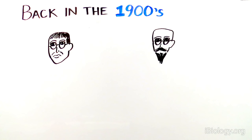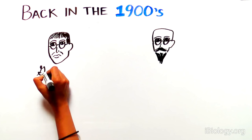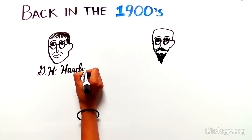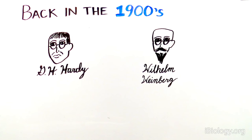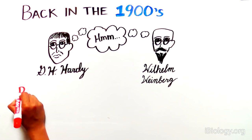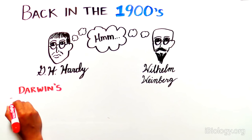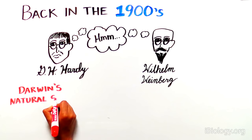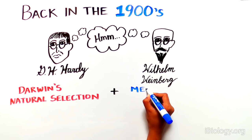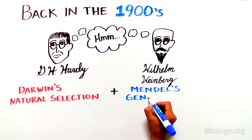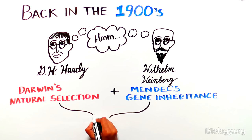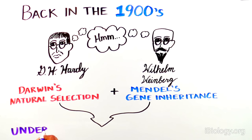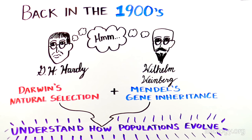Back in the early 1900s, a couple of scientists named G.H. Hardy and Wilhelm Weinberg started thinking that Darwin's theory of natural selection — survival of the fittest — and Mendel's ideas about inheritance of genes could be combined to help us understand how populations evolve.